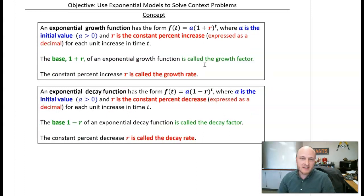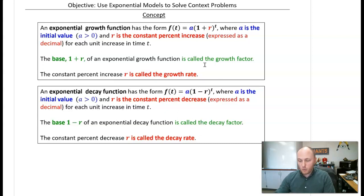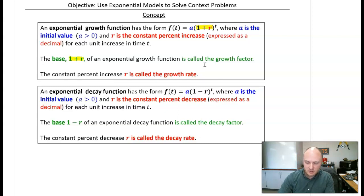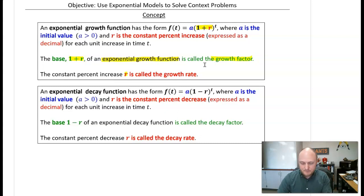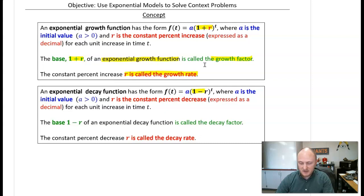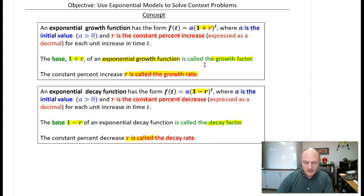Let's look at the basic form for exponential growth and exponential decay. For exponential growth, the base has to be bigger than one, so the base is modeled as one plus r — that is the exponential growth factor, where r is the specific growth rate. For exponential decay, the base is between zero and one, and the base is modeled as one minus r, which we call the decay factor, where r is the decay rate.